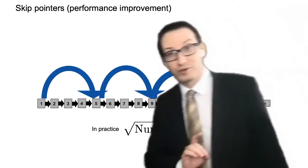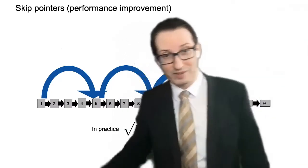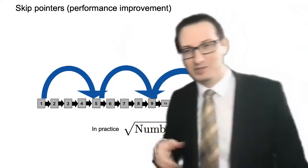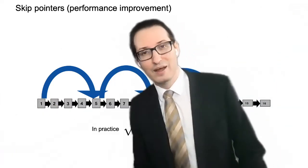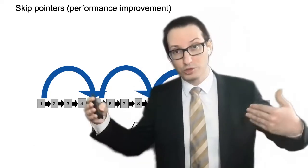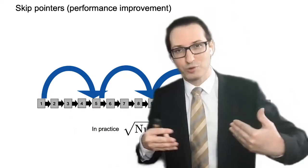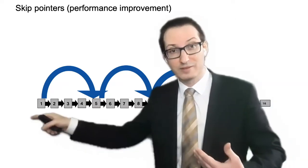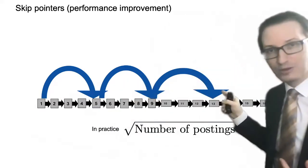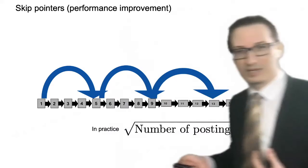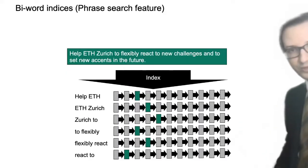We looked at skip pointers. That is a performance improvement that allows you to magically skip parts of the posting lists when you want to take a shortcut. This is especially useful when you have a very long conjunction of queries. And then after a while, some of the posting lists become so small that it makes sense to then skip entire pans of the other posting lists that you are intersecting it with.